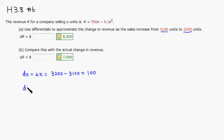Then let's find dR. We have to take the derivative, which is 700 minus, put 2 in front so it's 0.2x, times dx.